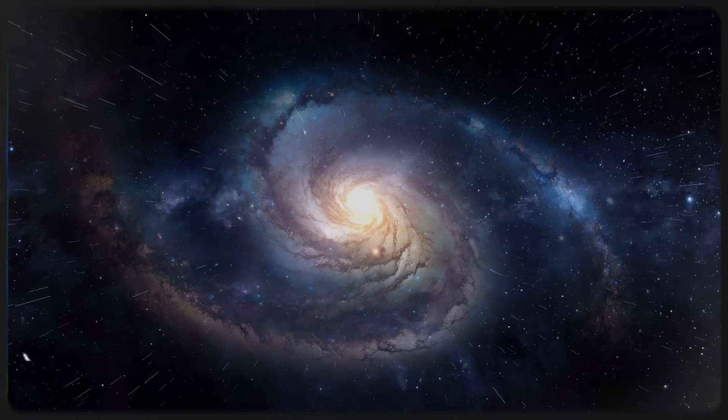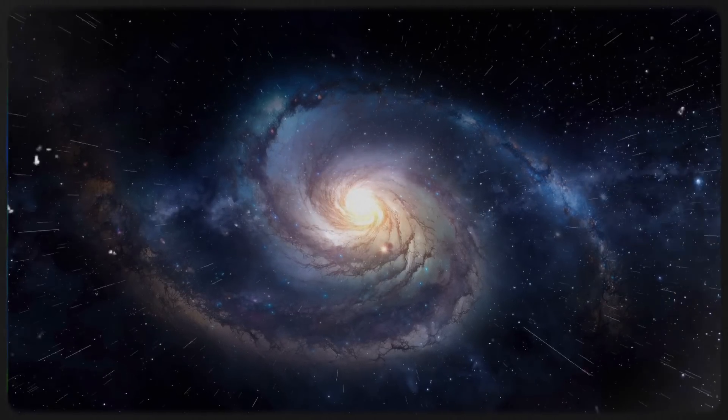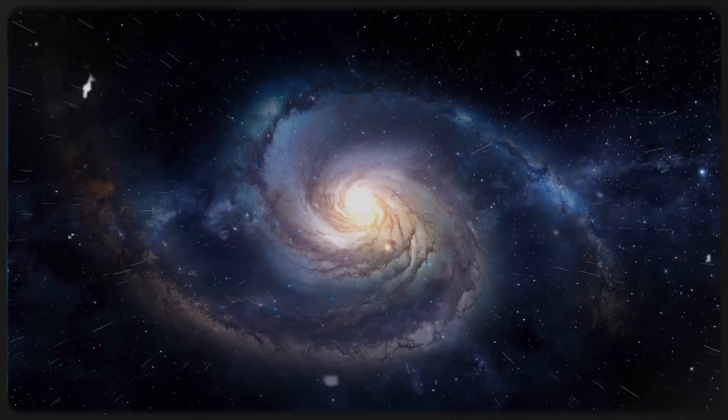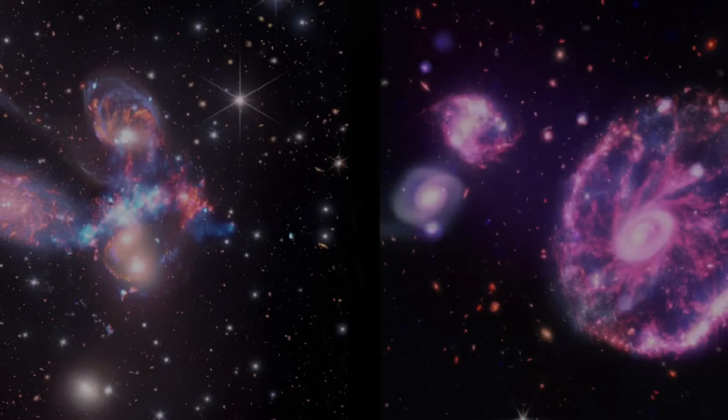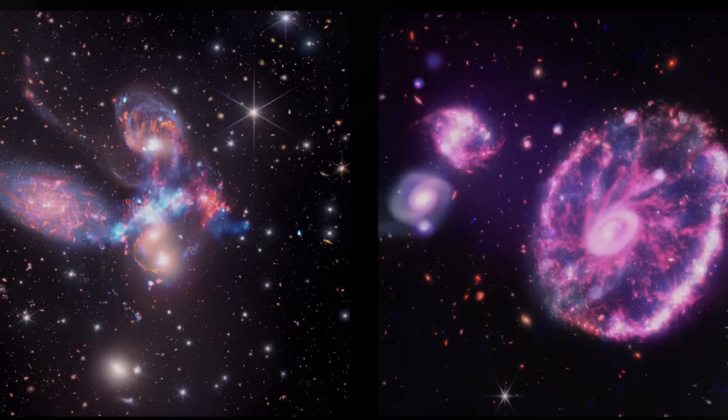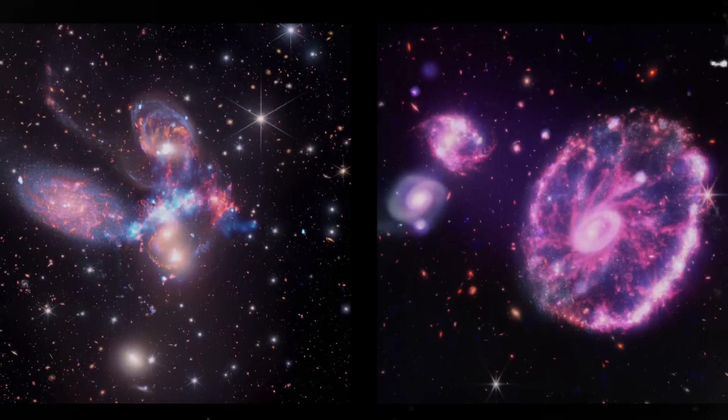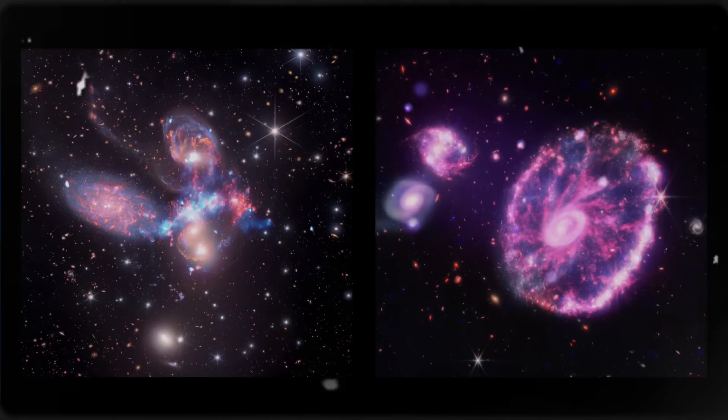As matter spirals into these behemoths, it emits intense X-rays, signals that telescopes like NASA's Chandra X-ray Observatory can detect. By comparing these X-ray observations with star formation data from the James Webb Space Telescope, scientists uncovered a striking pattern. The galaxies with the most voracious black holes had the lowest rates of star formation.